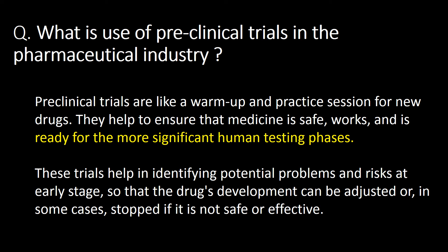What is the use of preclinical trials in the pharmaceutical industry? Preclinical trials are like a warm-up and practice session for new drugs. They help ensure that a medicine is safe, works, and is ready for the more significant human testing phases. These trials help identify potential problems and risks at an early stage so that drug development can be adjusted, or in some cases stopped, if it is not safe and effective.